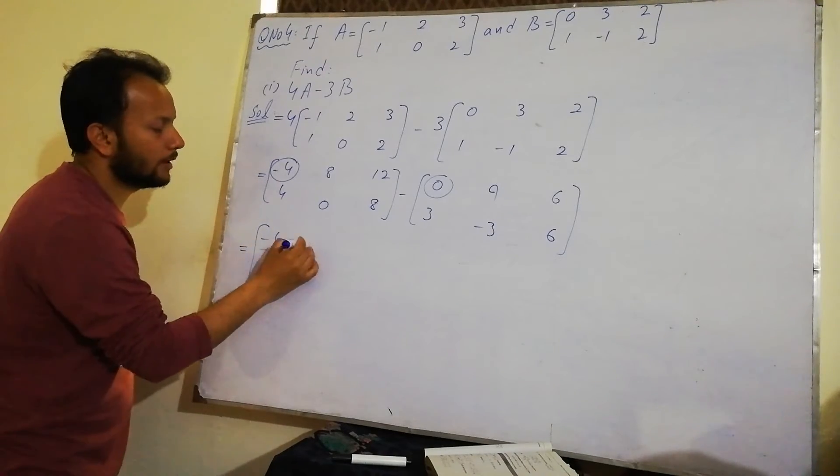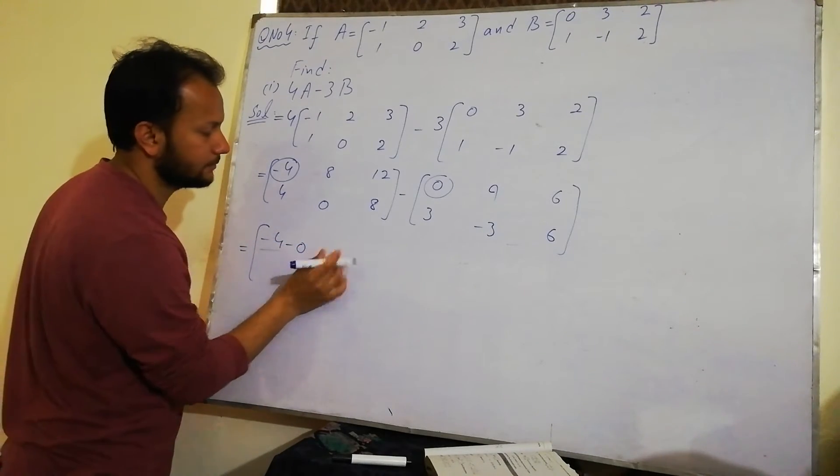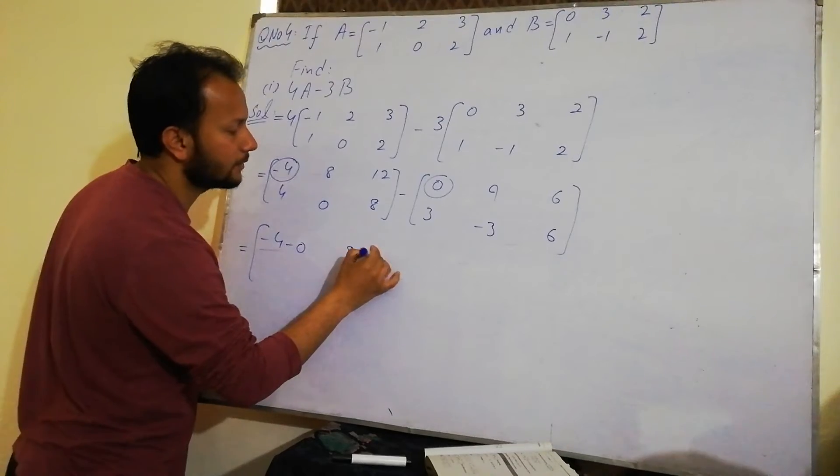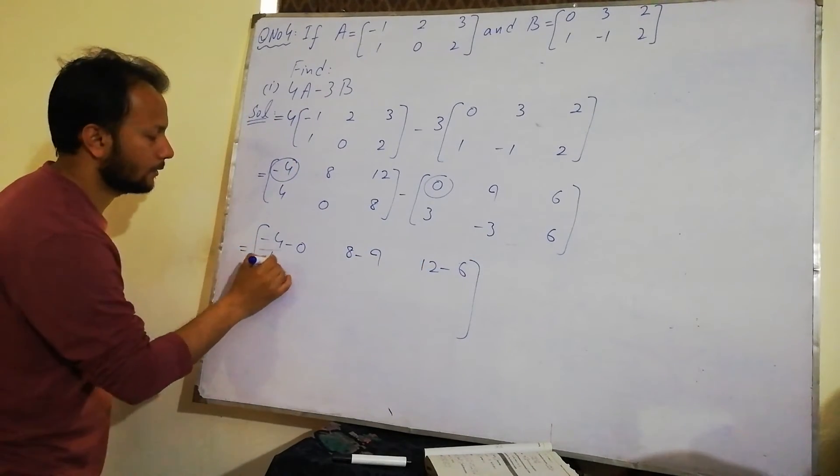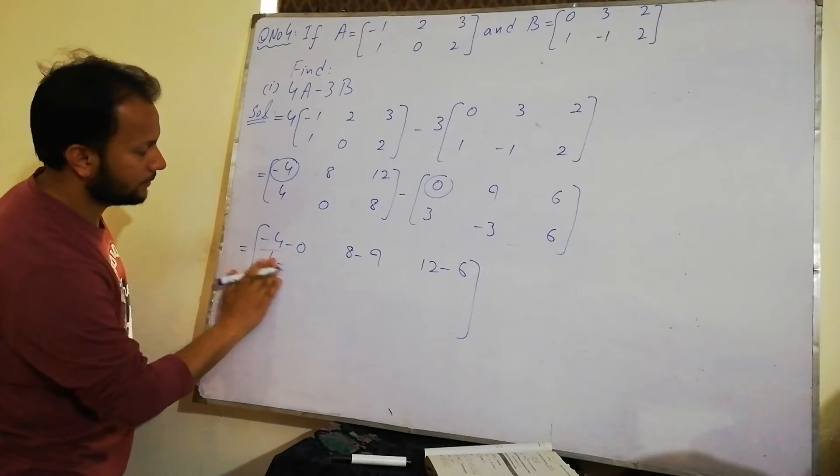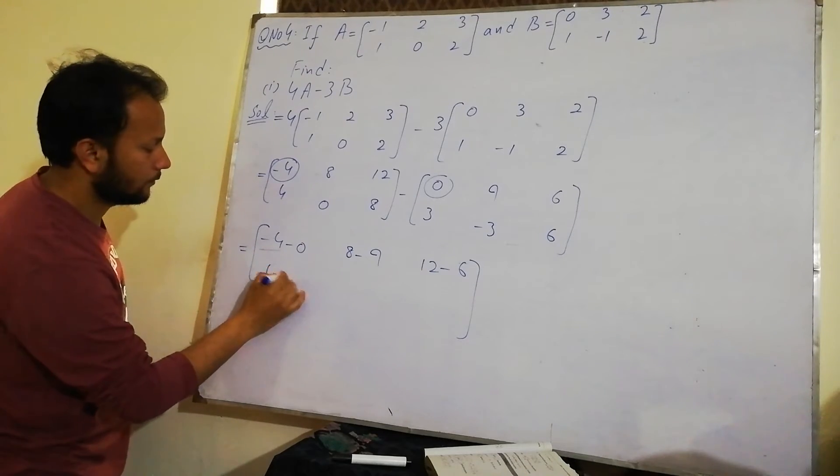So 4 minus 0. Then 8 minus 9. 12 minus 6. 4 minus 3.